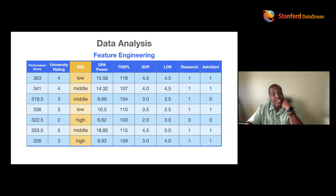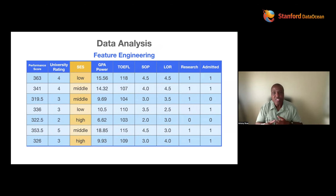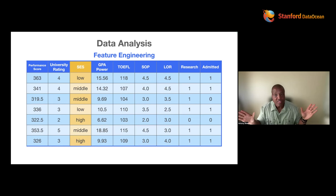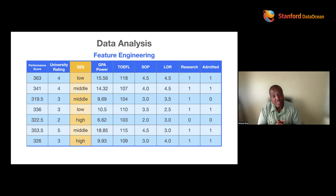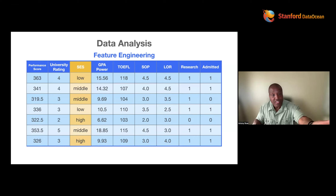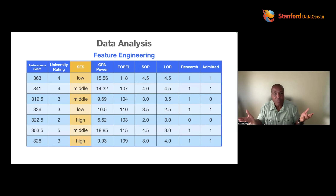Now let's say they started collecting another feature: socioeconomic status or family income. You're excited because you have skills and you're creative and you understand your domain. You say, I'm going to make this model so good — we're right about 89% accurate and I want to get it over 90. So: how are you going to convert socioeconomic status to numbers? What I love about what the participant said is she justified her position — that's what you have to do. It's art.